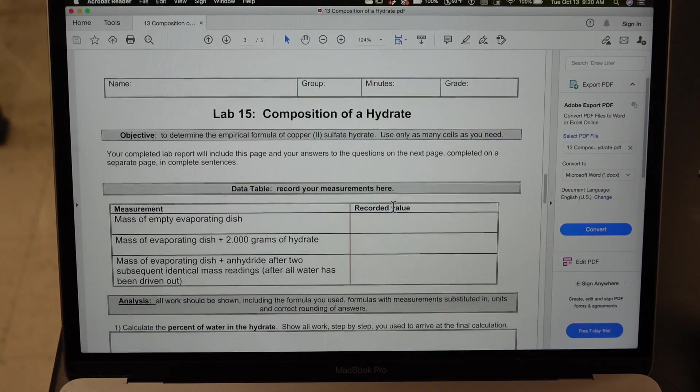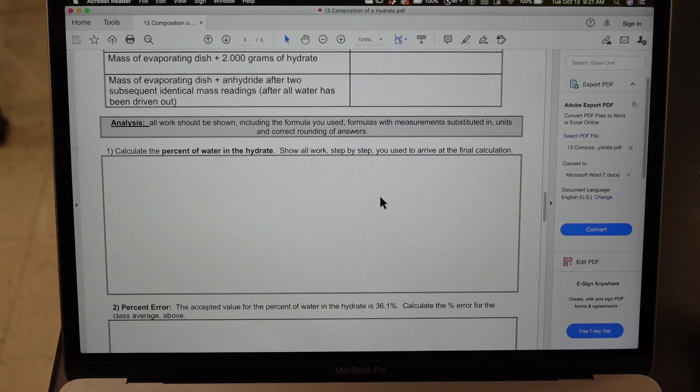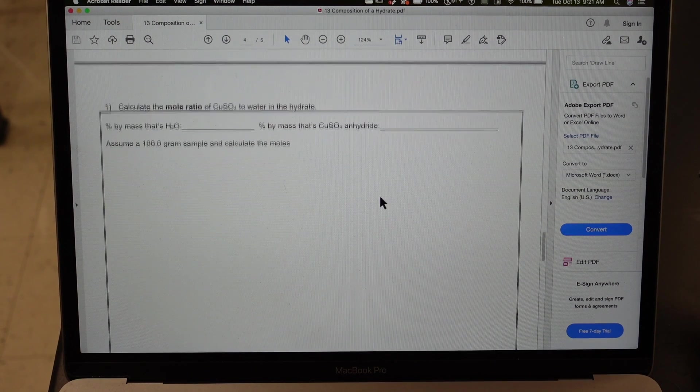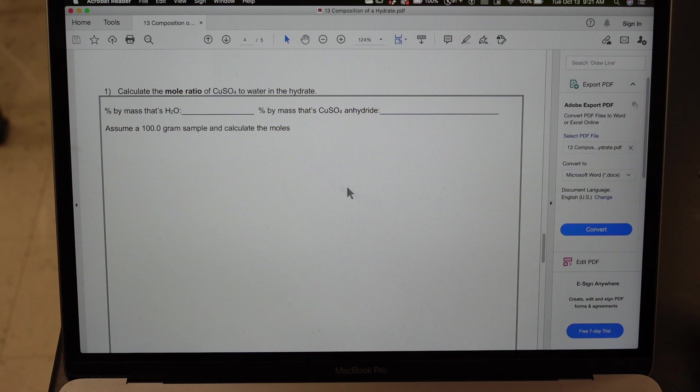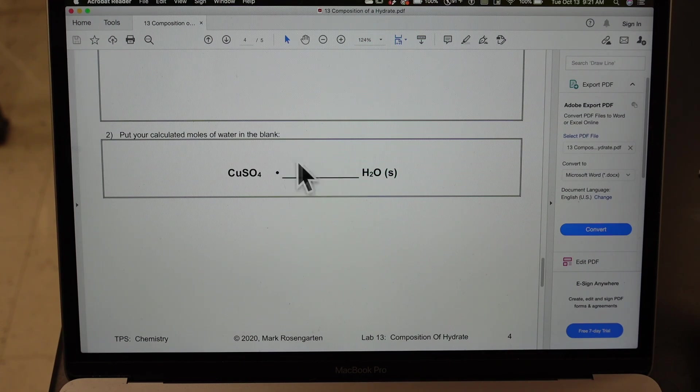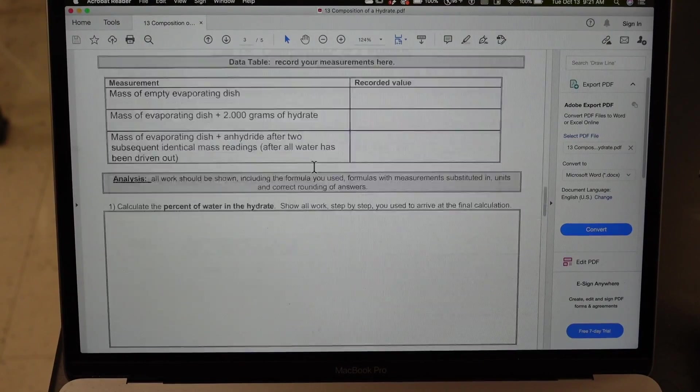We are going to record the mass of the empty evaporating dish, the mass of the evaporating dish plus two grams of hydrate, and then the mass of the evaporating dish and the anhydride after two subsequent identical mass readings which means all the water has been driven out. Then you'll calculate the percent by mass of water in the hydrate and calculate your percent error and then figure out the mole ratio of copper sulfate to water. Then you'll put that number here and there are some questions to answer and then you're done with the lab.